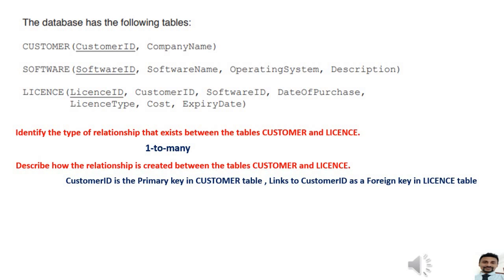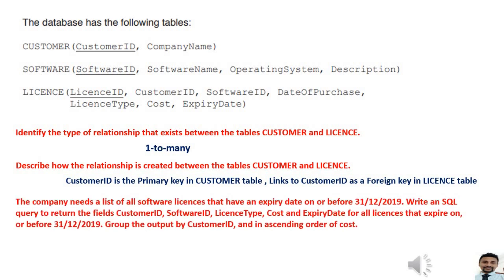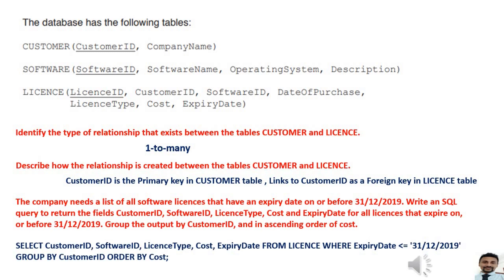Another question from the SQL part: the company needs a list of all software licenses that have an expiry date on or before 31/12/2019. Write an SQL query to return the fields customer ID, software ID, license type, cost, and expiry date for all licenses that expire on or before 31/12/2019. Group the output by customer ID and in ascending order of cost. Here we want to show only a few fields, so we use SELECT: customer ID, software ID, license type, cost, expiry date.